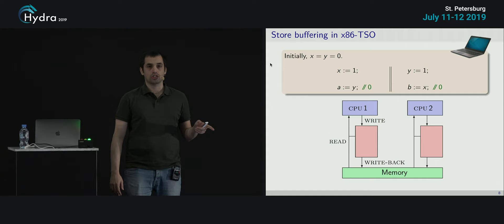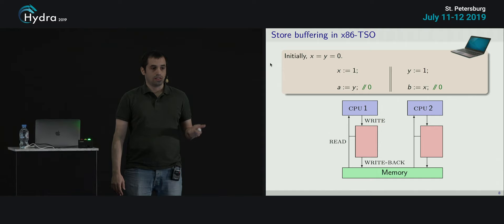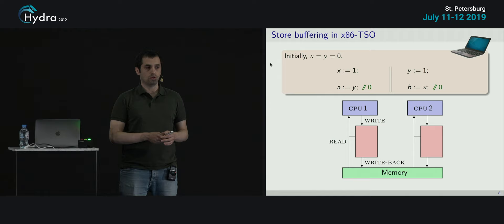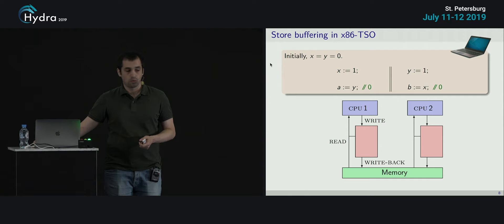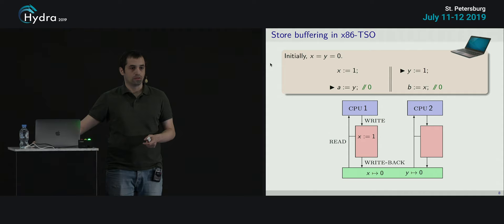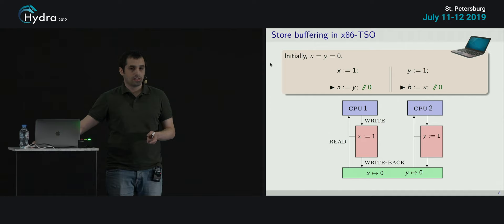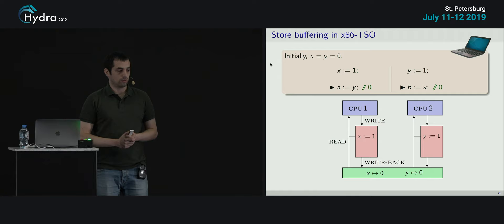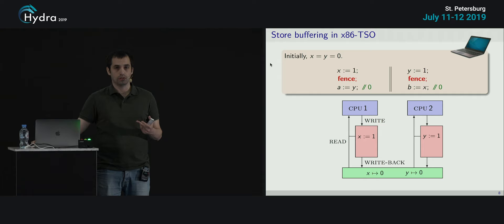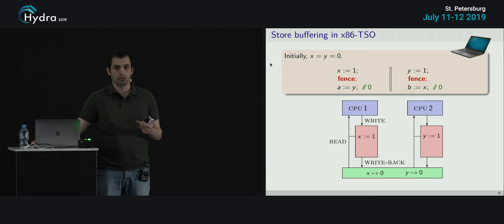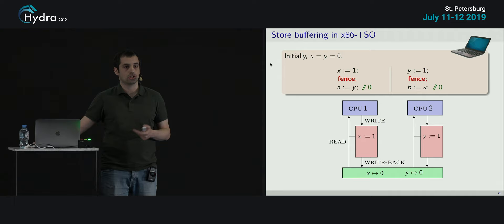In TSO — the most easy to explain — this is the program that actually ran on my laptop. In this abstract model, we have store buffers between the CPUs and the memory. When you do a store, it first waits in the buffer and later propagates to memory. So when the first thread does X=1, it goes to the buffer, not directly to memory. Then the second thread can do Y=1, and when it reads X, it reads from memory — reads zero. And the first thread, reading Y, again reads zero. We can forbid this with a fence to flush the buffers, but we usually don't want to pay that performance cost.